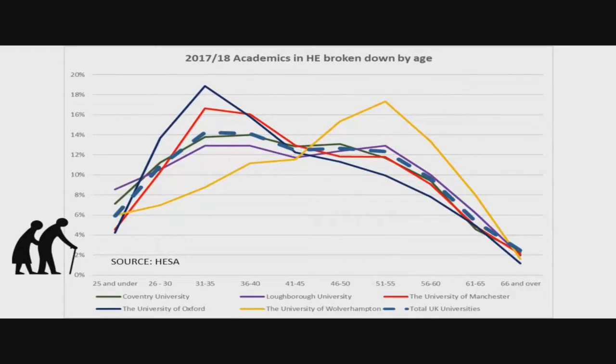The problem is, and these statistics show, that the average age of the academic ain't YouTube. Oxford actually does very well on this, as has Manchester, the red line. But we know where Oxford dons go when they get older: Wolverhampton, that's the yellow line.